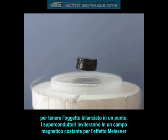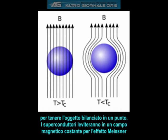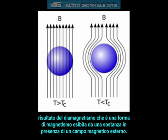However, superconductors will levitate in a constant magnetic field due to the Meissner effect, which is a result of diamagnetism — a form of magnetism that is only exhibited by a substance in the presence of an externally applied magnetic field.